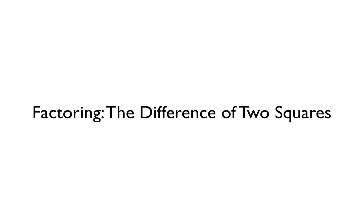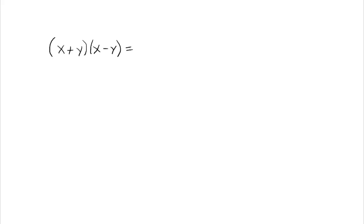In this video I'd like to talk about factoring an expression called the difference of two squares. But before we get to that, I want to refresh your memories on multiplying out two binomials. So x plus y times x minus y — just multiply that out. You have to distribute the x through and then distribute the y through. When you distribute the x through, we get x squared minus xy, and then distributing the y through, you get plus xy and then minus y squared. That's just previous knowledge.